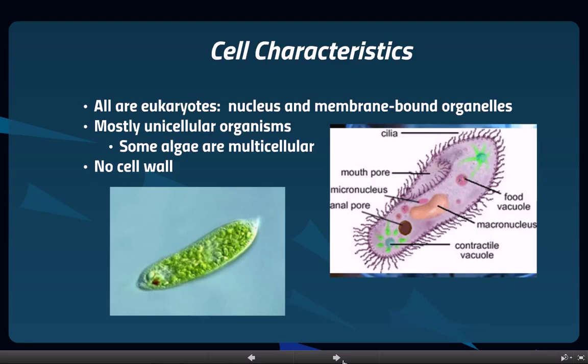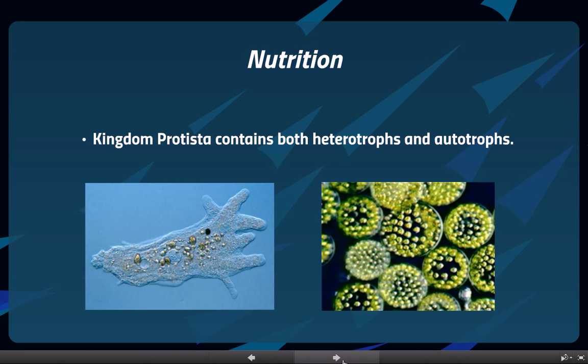Another thing to note is that Kingdom Protista protists do not have a cell wall, so they're not like plants in that way. However, they can be heterotrophs or autotrophs. Autotrophs is something they share with plants, while heterotrophs is what makes them look a little more like animals. The amoeba on the left is a heterotroph — you can even see some of the things it ate inside of it. On the right, those are autotrophs; you can see by the green color that they have chlorophyll and go through photosynthesis. Heterotrophs get food from others, meaning they eat others. Autotrophs can make their own nutrients.